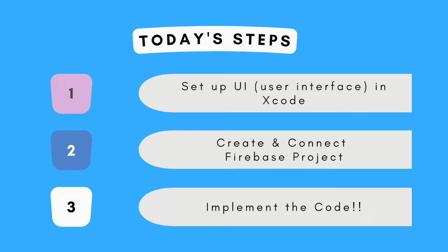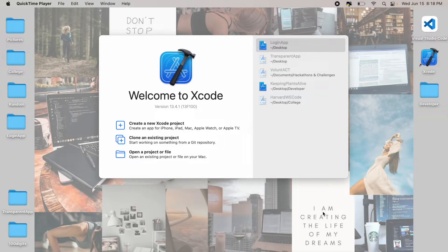This video is going to be chunked into three main parts, depending on how much of the project you already have done. We're going to start off by creating our Xcode project and designing the user interface. If you've already had that done, skip to part two where we'll be setting up Firebase and implementing it into our application. The final section is adding all the code necessary to get our app to a functional minimum viable product. So let's dive into part one: setting up the Xcode project and user interface.